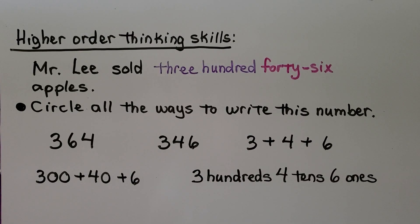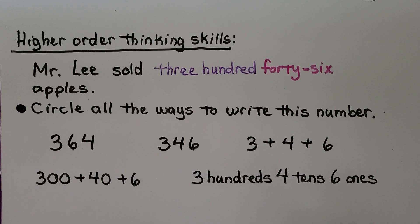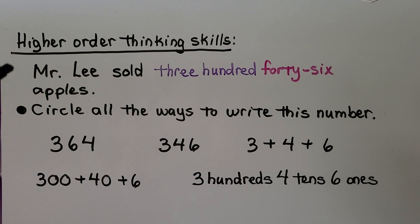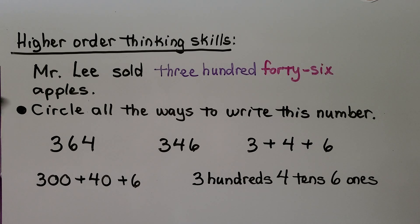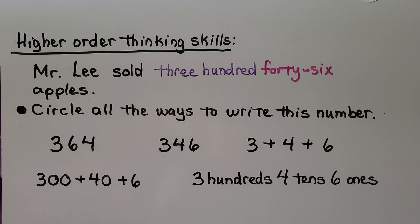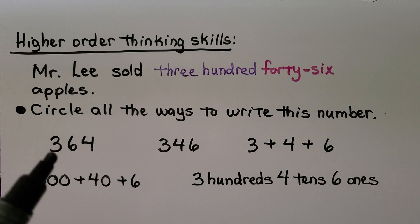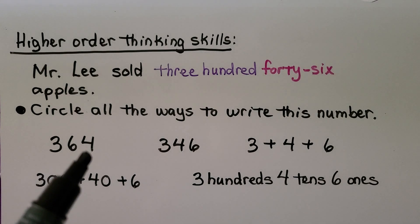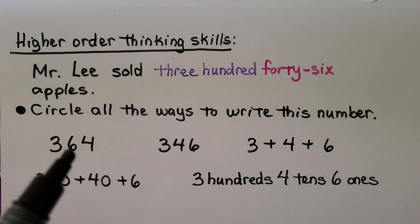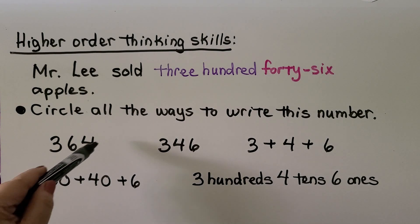Let's try some higher-order thinking skills. The problem says Mr. Lee sold three hundred forty-six apples. We need to circle all the ways to write this number. 'Three hundred sixty-four' is not right — the tens and ones are in the wrong place.